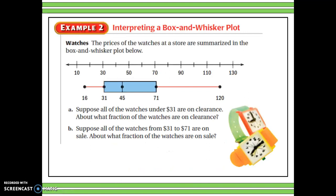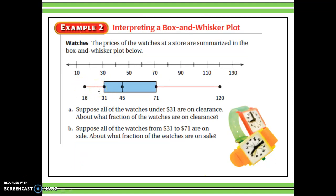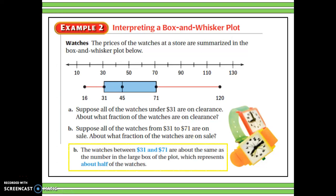Here is a box and whisker plot showing prices of watches at a store. If all watches under $31 are on clearance, that represents about one-fourth of the data, because $31 is the lower quartile, and from the lower quartile down to the lower extreme is one-fourth. If watches from $31 to $71 are on sale, that represents about one-half of the data, since from quartile to quartile is half the data.